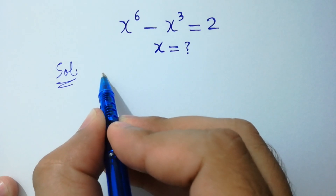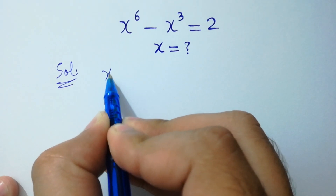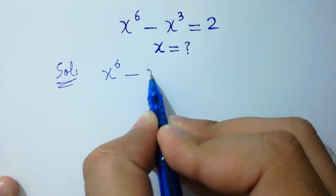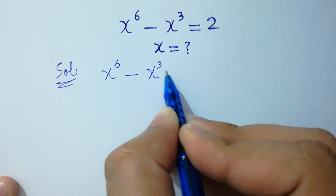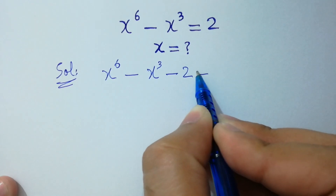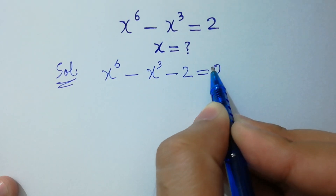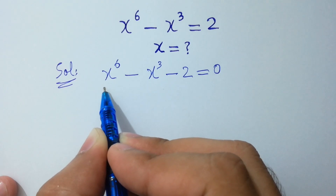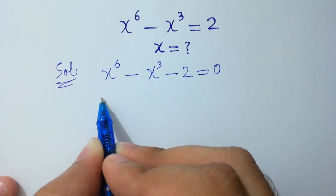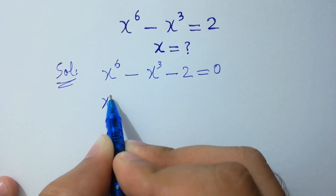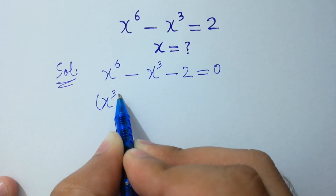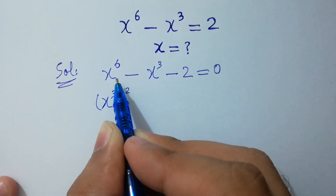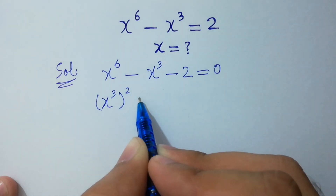We rewrite the equation as x to the power 6 minus x cube minus 2 equal to 0. Note that x to the power 6 can be written as x cube to the whole power 2, because 3 times 2 equals 6.